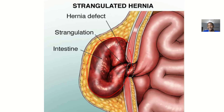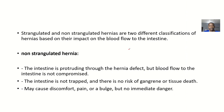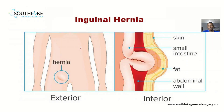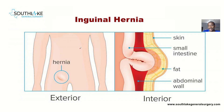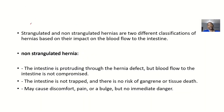This can lead to complications like ischemia. For the non-strangulated hernia, there could be twisting of the intestines or the intestine going through the defect area, but the blood supply is not involved or affected.